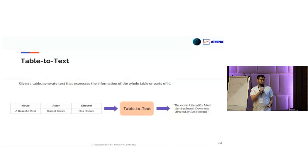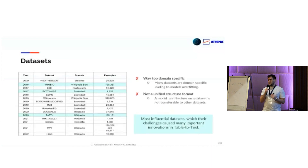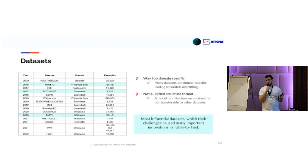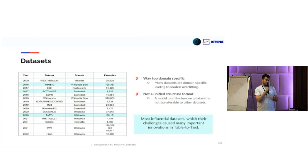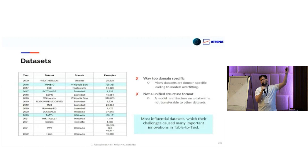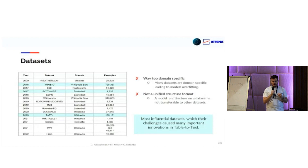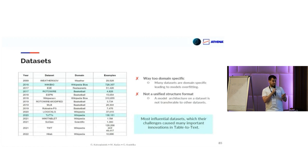There has been a lot of work and many datasets around table to text, and they are fairly recent ones. The datasets are pretty recent after 2016, except the first one from 2009. The first ones were domain-specific — about Wikipedia biographies, restaurants, basketball games, and so on. After 2020, we see more broader domain datasets. Some of the most influential datasets that boosted research are WikiBio and Rotowire.